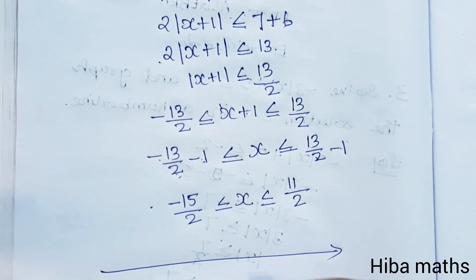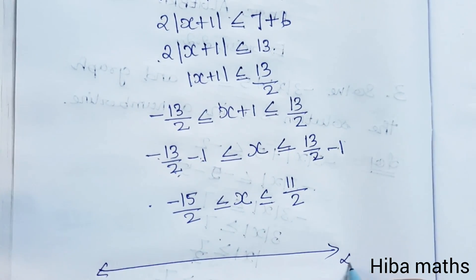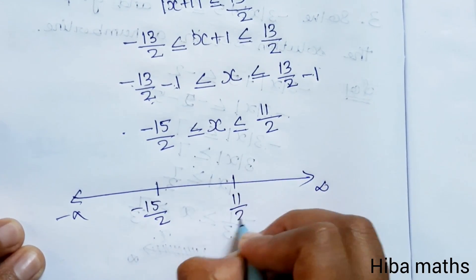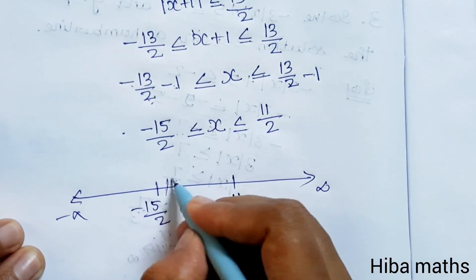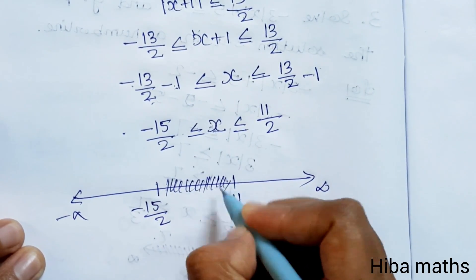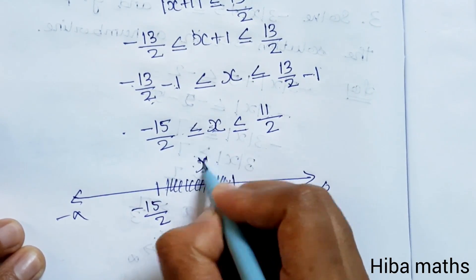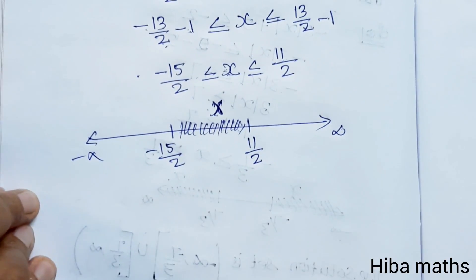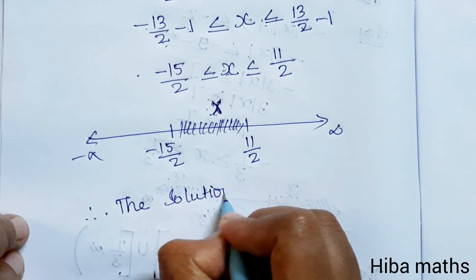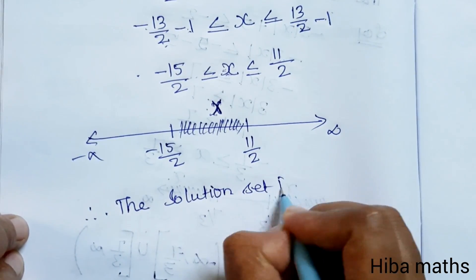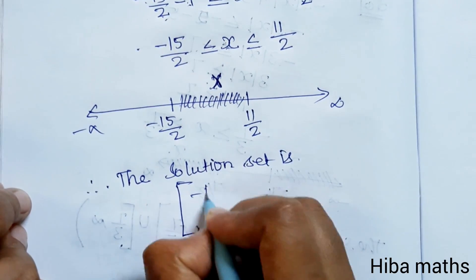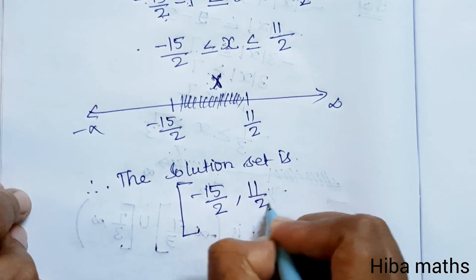So in the end, x is greater than and less than — the solution set is therefore the interval from minus 15 by 2 to 11 by 2. Thank you so much for watching.